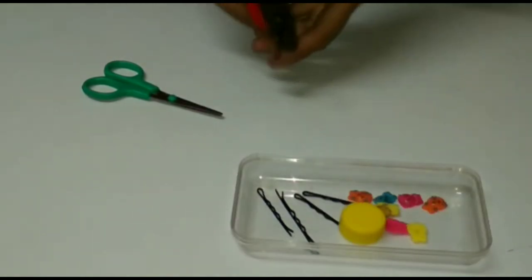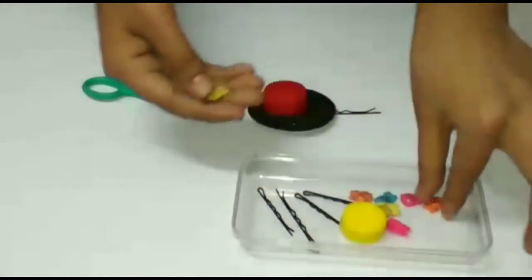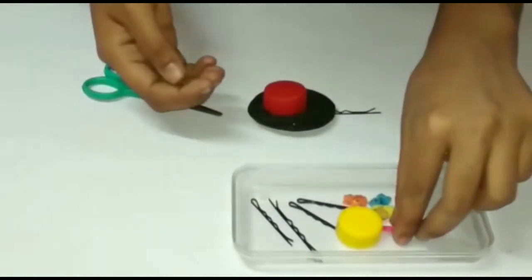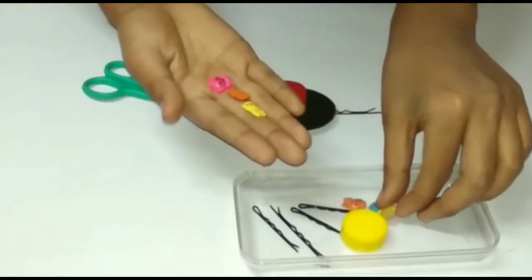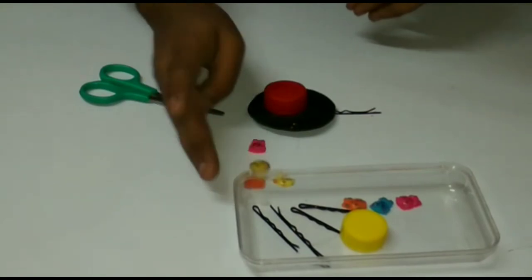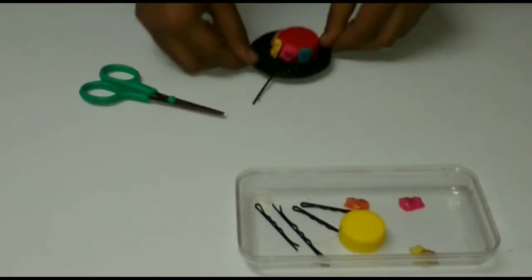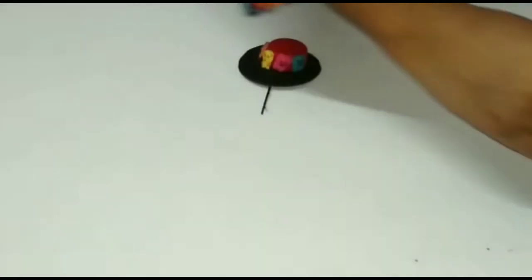As you see, I paste the bobby pin at the back. Now decorate this with the help of these small toys. You can take the help of a glue gun.